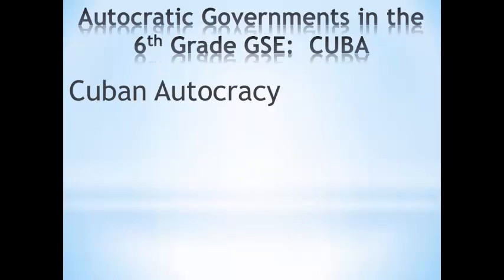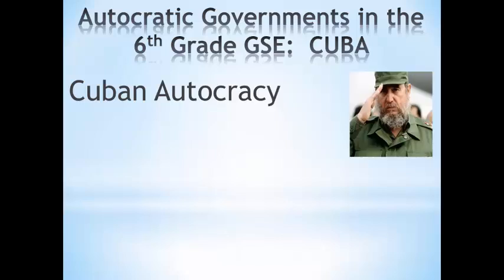Cuba is the best example of an autocratic style of government among the countries that sixth graders study. Cuba has had an autocratic form of government since its revolution in 1959, when Fidel Castro led an armed revolution and deposed the previous government. Once Castro was in power, the systems of government changed so that he would remain in power.